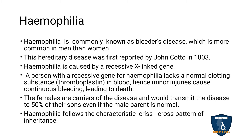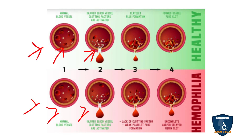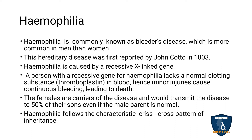Hemophilia is a bleeder disease. Normally, blood clotting occurs when there is an injury — blood vessels constrict, a clot forms, and bleeding stops. But in a hemophilia patient, this clotting does not occur properly, so hemophilia is a bleeding disease. It is more common in men than in women.